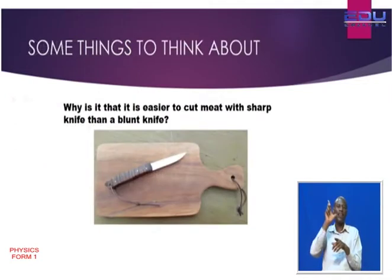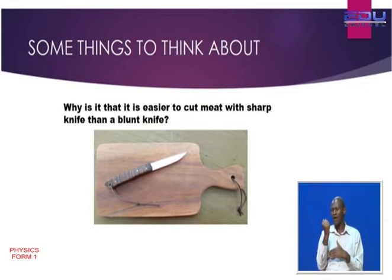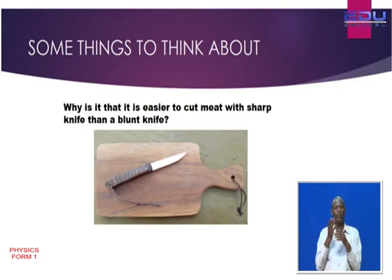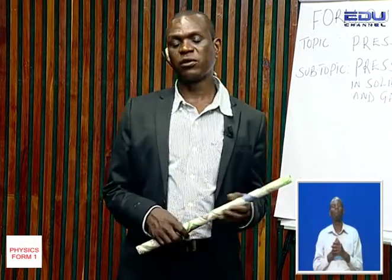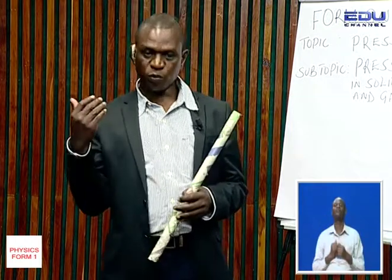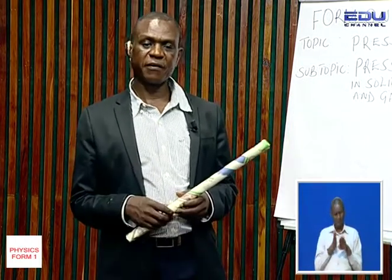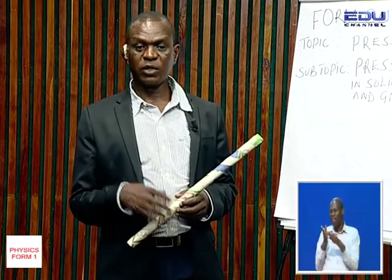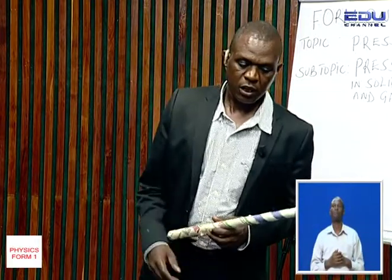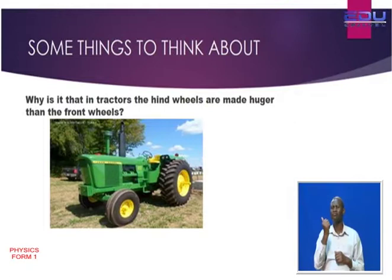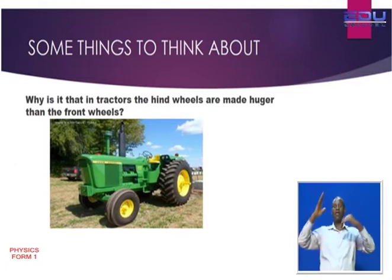To start, something to think about. Why is it easier to cut meat with a sharp knife than a blunt knife? Often in the house you prefer using a sharp knife over the blunt one. Also, why are the hind wheels of a tractor made larger than the front wheels?